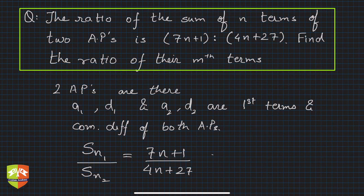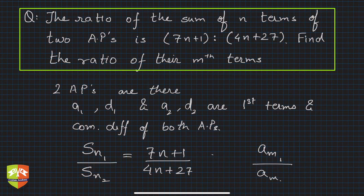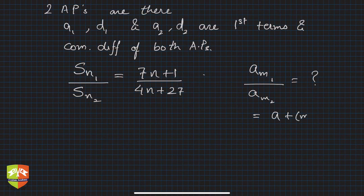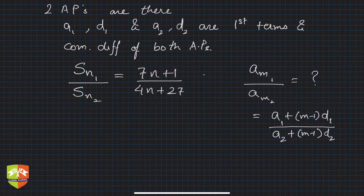What is to be found out? We have to find the ratio of their mth terms — that is, am1 over am2, which equals (a1 + (m-1)d1) over (a2 + (m-1)d2). This is the ratio of the mth term of both APs, and this is what we have to achieve.